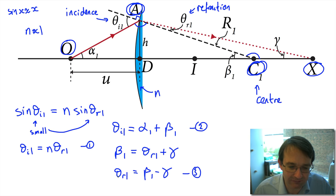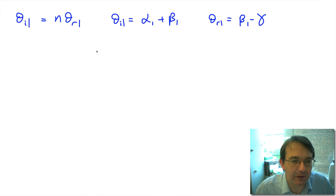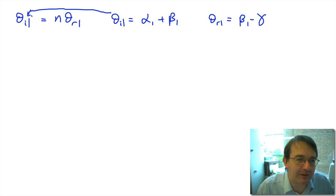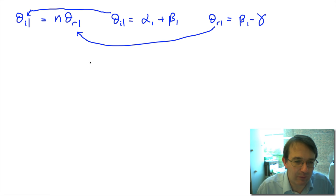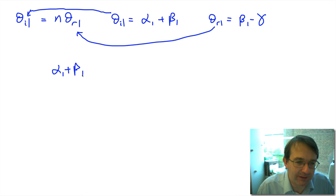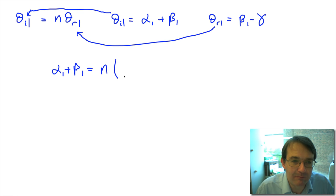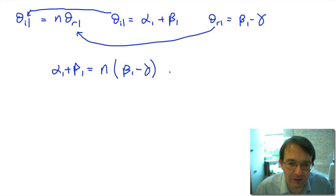We now have three equations: θi1 = n·θr1, θi1 = α1 + β1, and θr1 = β1 − γ. Substituting the second into the first and the third into the first, we combine them to eliminate the angles of incidence and refraction, giving us: α1 + β1 = n(β1 − γ).